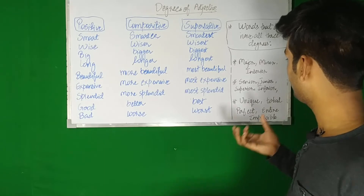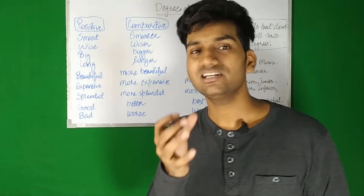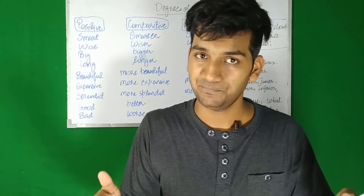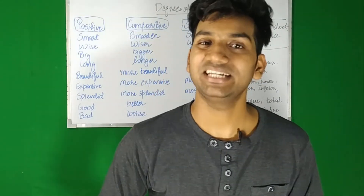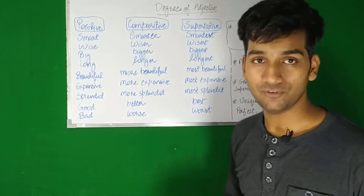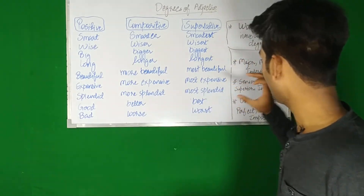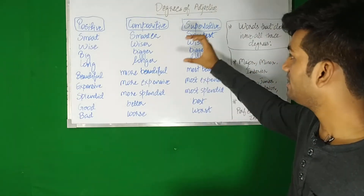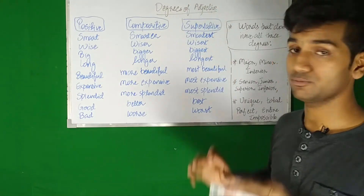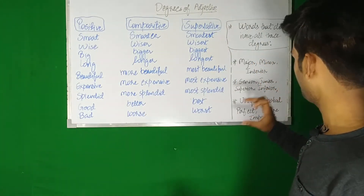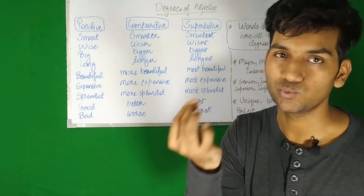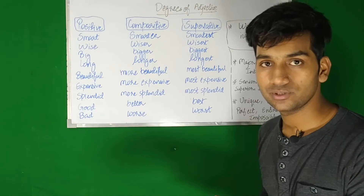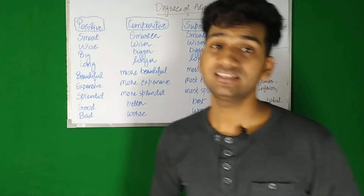Some words - senior, junior, inferior, superior - are used in a comparative way. You are always senior to somebody, always junior to somebody. So these are always used as a comparative degree and do not have a superlative or positive form. Also important: after senior, junior, superior, inferior, we do not use 'than' as we generally do with comparatives. Instead, we follow them with 'to.' 'He is senior to him.' 'I am junior to you.' 'This girl is superior to her.'